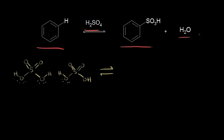Since this reaction is at equilibrium, we can shift the equilibrium by using different concentrations of sulfuric acid. If we use concentrated sulfuric acid, we would shift the equilibrium to the right to make more benzene sulfonic acid. If we use more dilute sulfuric acid, so we have more water, that would shift the equilibrium to the left. The fact that this is a reversible reaction is sometimes used in synthesis problems.